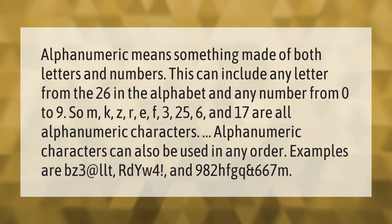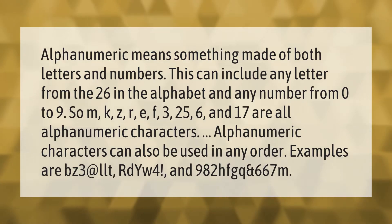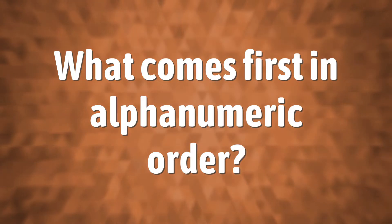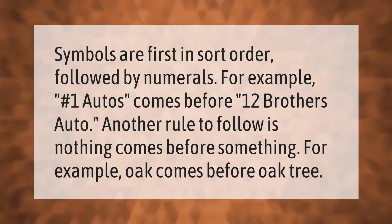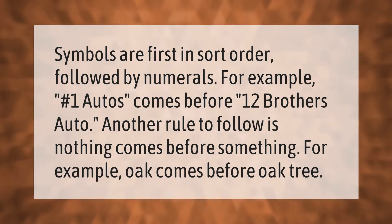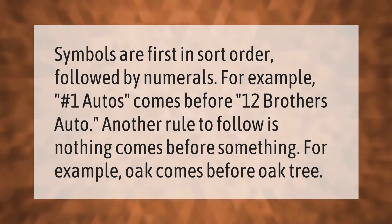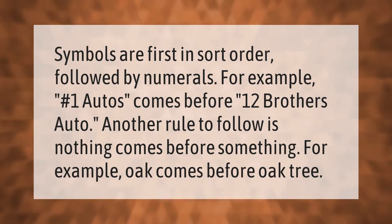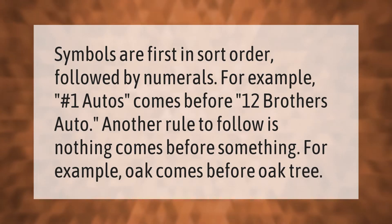Symbols are first in sort order, followed by numerals. For example, "#1 Autos" comes before "12 Brothers Auto." Another rule to follow is that nothing comes before something — for example, "Oak" comes before "Oak Tree."